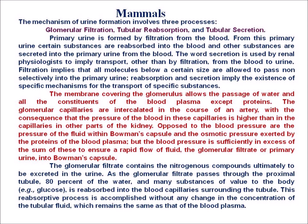The membrane covering the glomerulus allows the passage of water and all constituents of the blood plasma except proteins. The glomerular capillaries are intercalated in the course of an artery, with the consequence that the pressure of the blood in these capillaries is higher than in the capillaries in other parts of the kidney. Opposed to blood pressure are the pressure of the fluid within Bowman's capsule and the osmotic pressure exerted by the proteins of the blood plasma, but the blood pressure is sufficiently in excess of these to ensure a rapid flow of fluid — the glomerular filtrate or primary urine — into Bowman's capsule. The glomerular filtrate contains the nitrogenous compounds ultimately to be excreted in the urine.